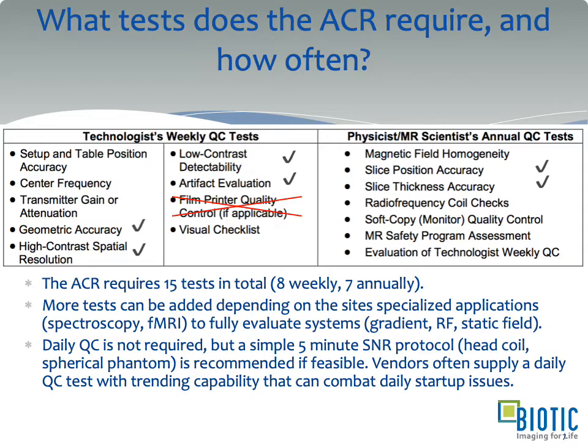The ACR does not require daily QC, and in general we do not do that across the province, though some sites have a simple daily five-minute signal-to-noise ratio protocol using a head coil and spherical phantom. It's recommended by the ACR if feasible but not required. Vendors often have a QC test accessible from the service browser that can be run by the local site for trending. If you wish to do it, it's in the service desktop of your MR systems.